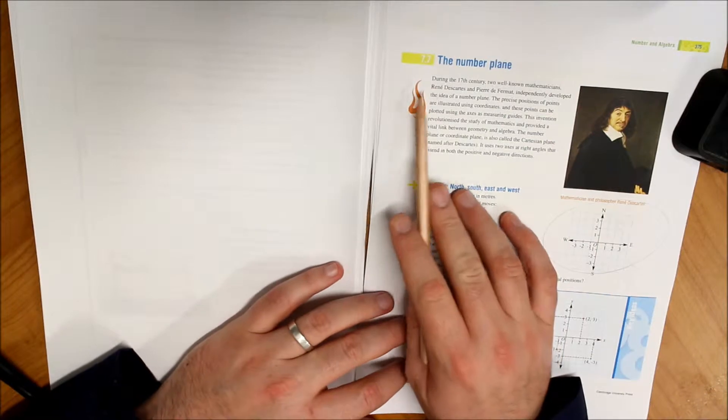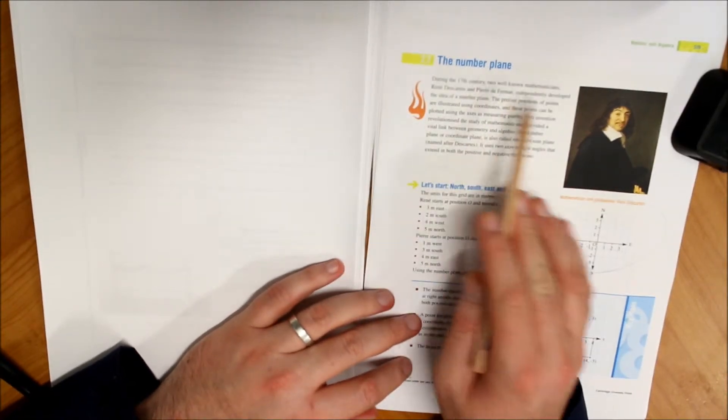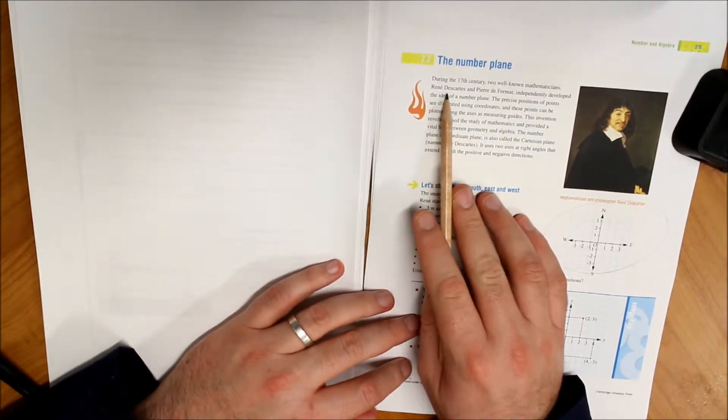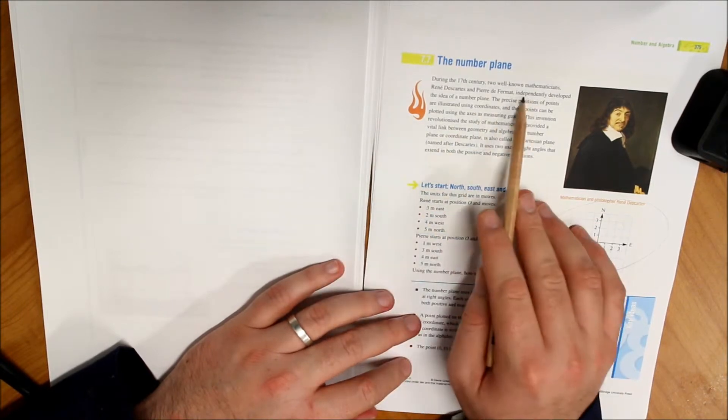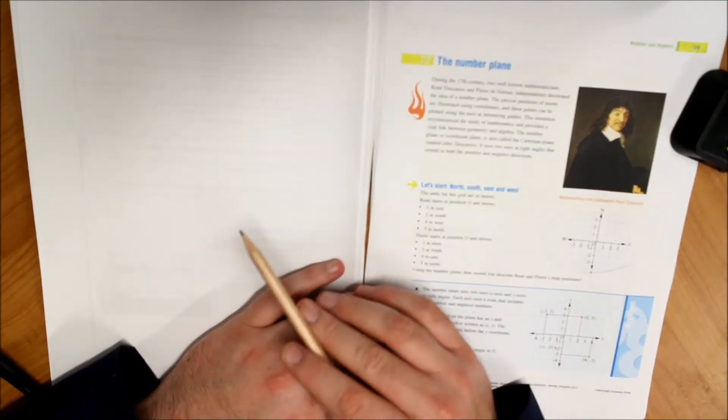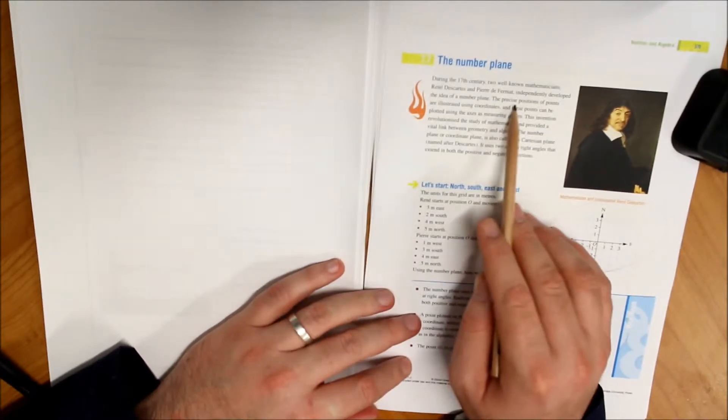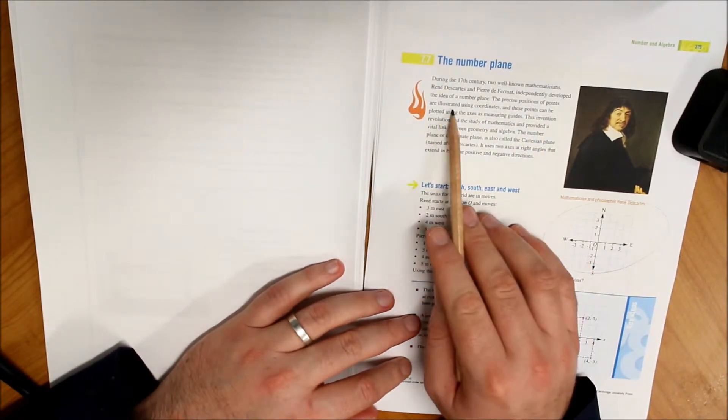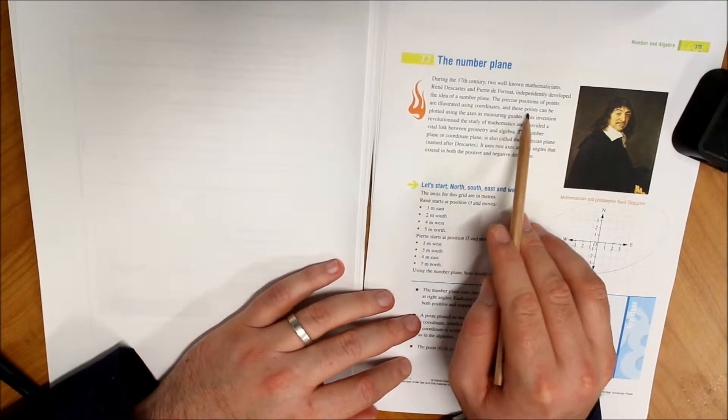So let's have a read here. During the 17th century, two well-known mathematicians—I'll let you have a go at those names—independently developed the idea of a number plane.